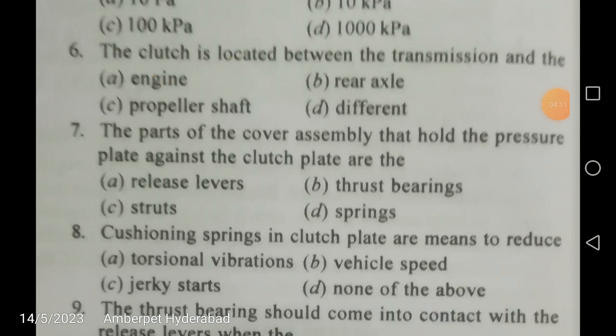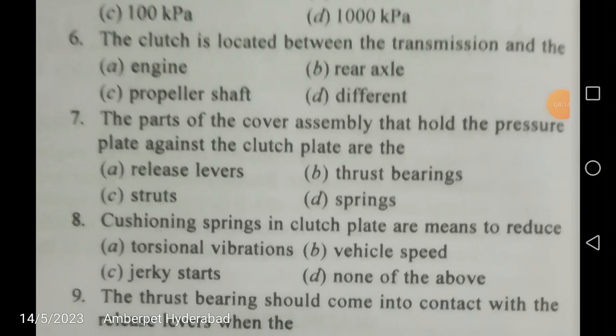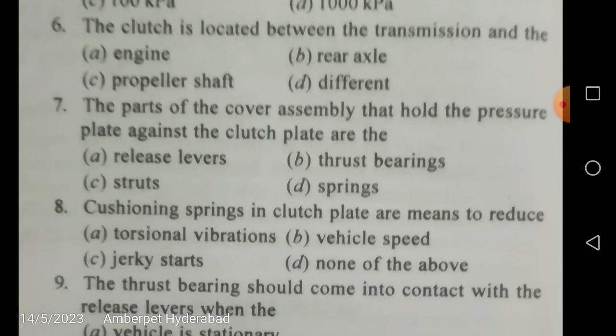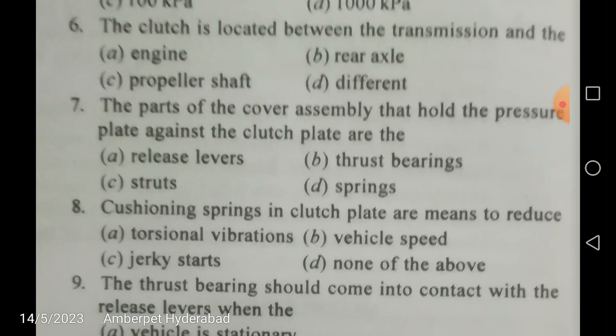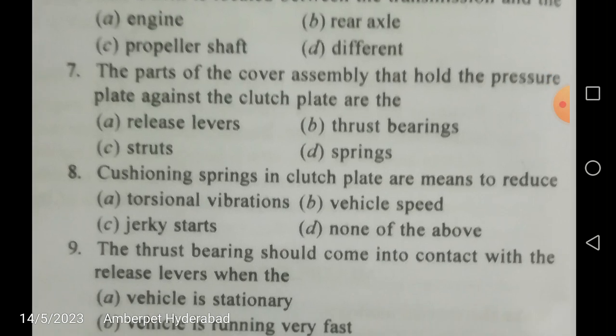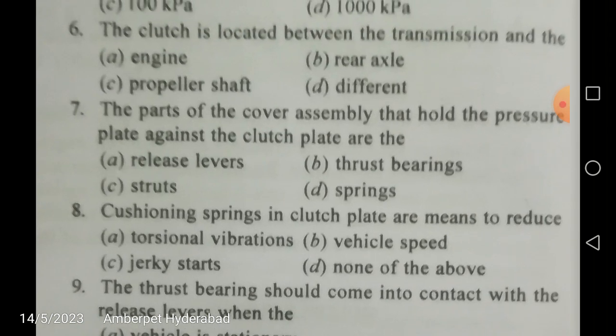To be precise, the clutch is between the flywheel and the gearbox. The purpose of a flywheel is to minimize fluctuations of engine speed — it acts as a mechanical capacitor. During the power stroke it absorbs energy, and during the remaining strokes — suction, compression, and exhaust — it supplies energy to the engine, providing uniform speed at the crankshaft.